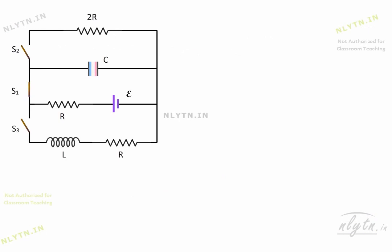Initially, the charge on the capacitor will be equal to this term. Now, when the switch is open and these switches are closed, then we have a separate RC circuit and a separate RL circuit.